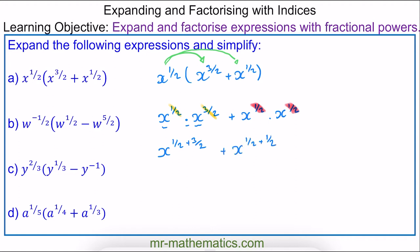Adding those fractions gives x to the power of four over two, plus x to the power of two over two. I can simplify this: four over two is two, so this becomes x squared, and two divided by two is one, so this becomes x squared plus x.